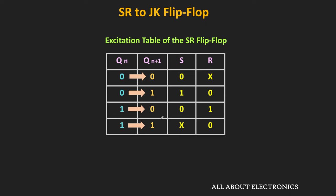As you can see, in the first case, both Qn and Qn+1 are 0. When both S and R inputs are 0, the SR flip-flop will retain its current state — so presently if Qn is 0, then in the next state Qn+1 will remain 0. Similarly, if S is 0 and R is 1, then Qn+1 will also become 0. So in general, to get this 0→0 transition, S should be equal to 0, while R can be either 0 or 1 — that is, S = 0 and R = X, where X means the input can be either 0 or 1.